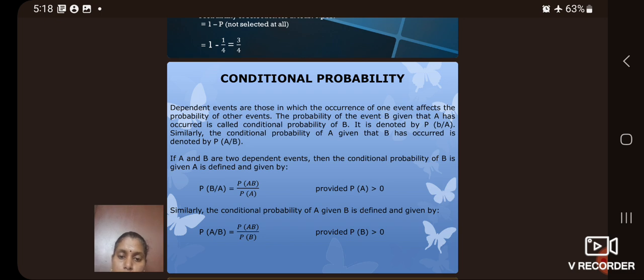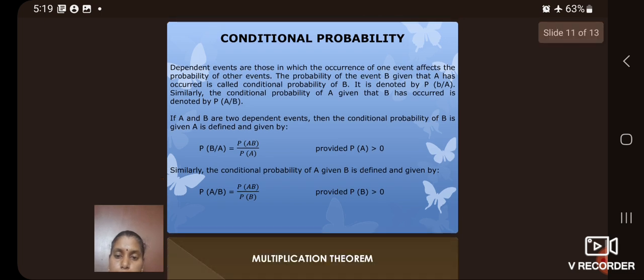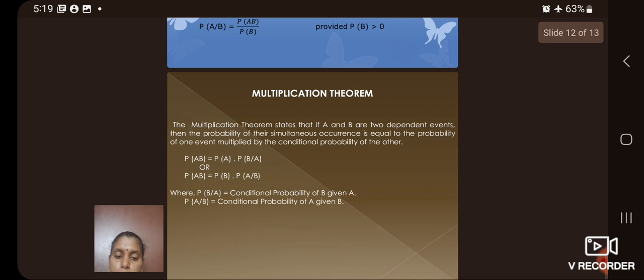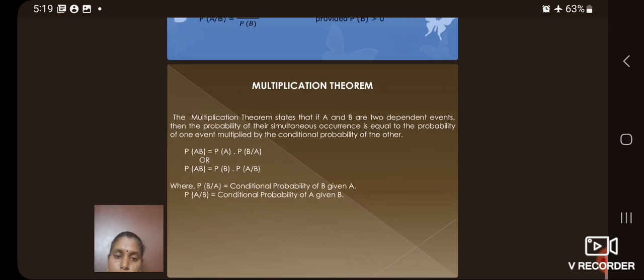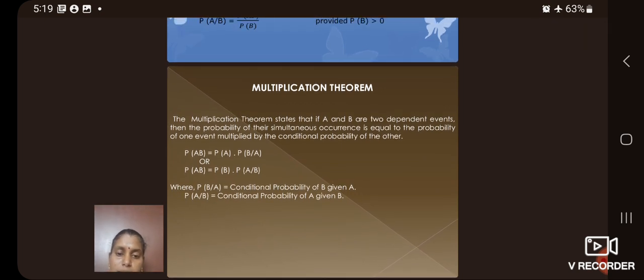Let us see the conditional probability. Conditional probability is defined as if A and B are two independent events, then the conditional probability of B given A is defined to be P of B given A equal to P of A, B divided by P of A. Similarly, conditional probability of A given B is defined as P of A given B equal to P of A, B divided by P of B.